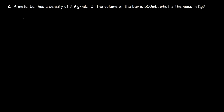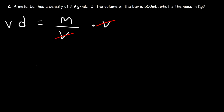So let's use this equation: D is equal to M over V. Now we're looking for the mass, so let's rearrange the equation. Let's multiply both sides by volume. On the right side, V will cancel. So therefore, the mass is the density times the volume.